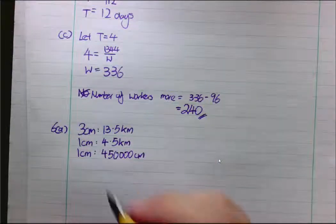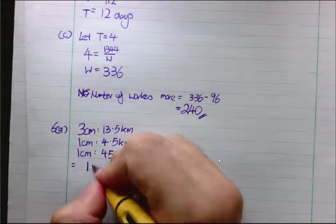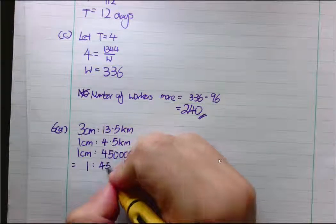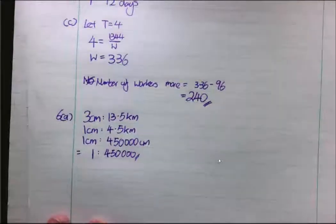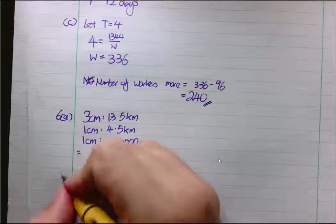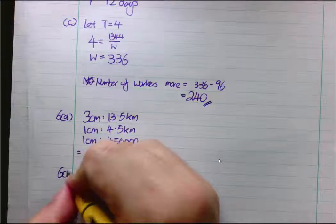CM and cm for map scale, just eliminate the units. So, the map scale is 1 is to 450,000. And that concludes 6a. So, take note, there should be no units here.